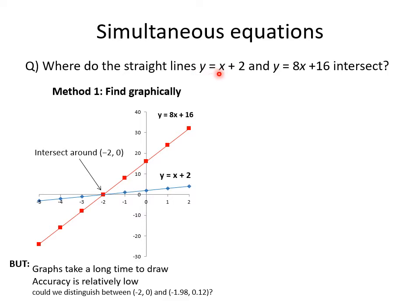So these equations are satisfied when Y is equal to zero and X is equal to minus two. That works for the first equation, and checking the second: zero equals 8 times minus 2 plus 16, which gives minus 16 plus 16 equals zero — so that's a valid solution.